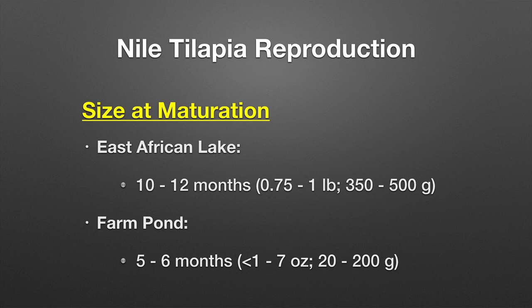Nile tilapia start maturing at about 10 to 12 months in East African lakes, with a size of maturation between three-quarters to one pound, or about 350 to 500 grams. However, in an aquaculture situation such as a farm pond, the size of maturation can be five to six months, and they can start reproducing at one to seven ounces or 20 to 200 grams — very small fish with the ability to reproduce.